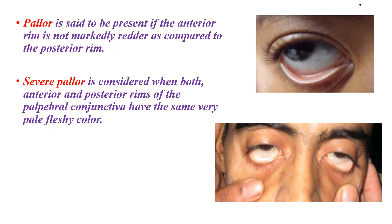Based on the lower palpebral conjunctiva, pallor is said to be present if the anterior rim is not markedly red compared to the posterior rim. Severe pallor is considered when both the anterior and posterior rims of the palpebral conjunctiva have the same very pale fleshy color. So we can identify pallor and severe pallor by looking at the palpebral conjunctiva.